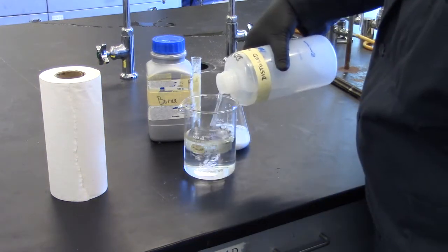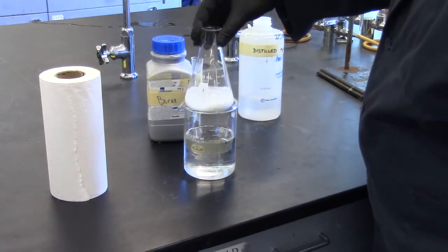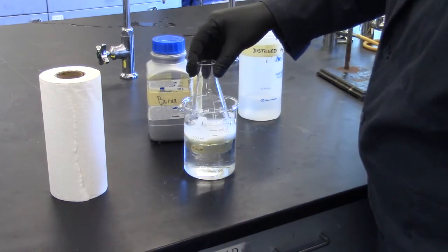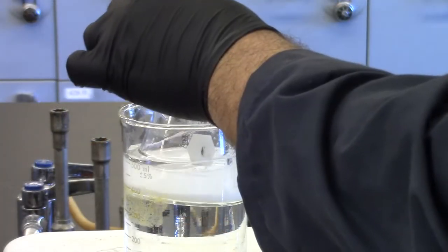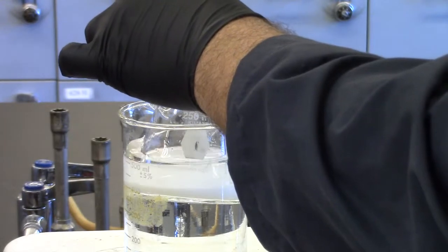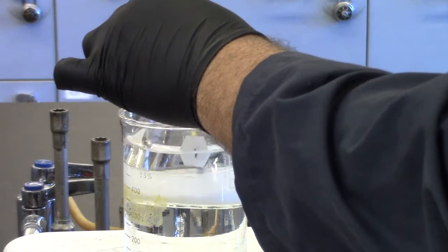Place this flask into a 600 milliliter beaker of water. The beaker will serve as a heating bath. Heat the bath very gently until the bath temperature and solution are at approximately 55 degrees Celsius.